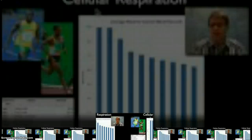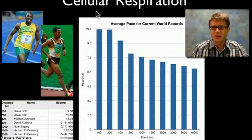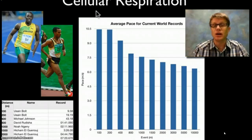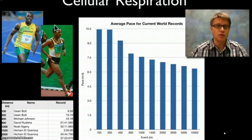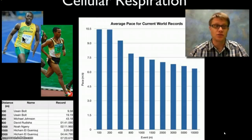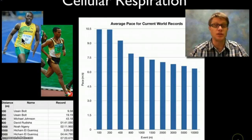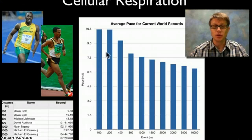So this is Usain Bolt. Bacteria, can you do respiration? You sure can. You don't need a mitochondria to do respiration. They can actually use their outer membranes to do aerobic respiration. Basically, if you are a track athlete, so this is Usain Bolt right here, when you run you're using respiration to make energy in the form of ATP and allow your muscles to move.